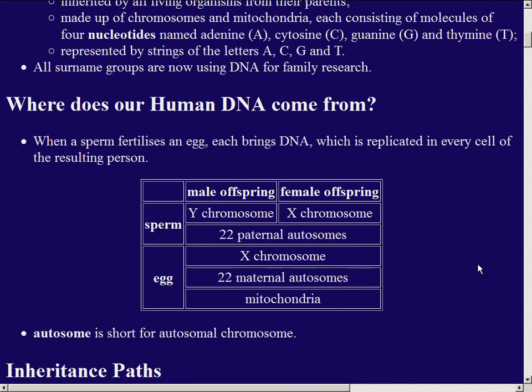We all started out as a sperm fertilizing an egg. If we're male the sperm had a Y chromosome; if female, an X chromosome — they're different lengths and that determines our gender. The sperm from the father also brings 22 paternal autosomal chromosomes paired up with another 22 autosomes from the mother through the egg, so autosomal DNA comes exactly half from the father and exactly half from the mother. Mitochondrial DNA comes in the egg from the mother, and it's not easy to do genealogy on because all those women married and changed their surnames every generation.